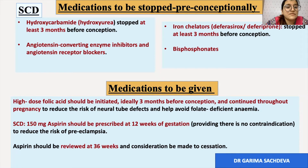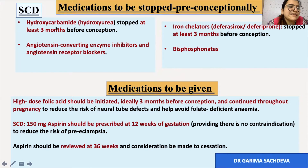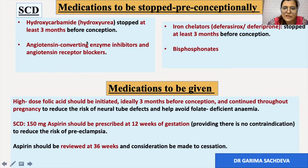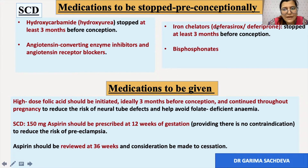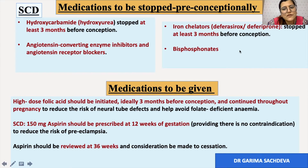Regarding medications to be stopped in the preconception period: for sickle cell disease, hydroxyurea should be stopped at least three months before conception, and ACE inhibitors and ARBs given for hypertension should be stopped preconceptionally. For beta thalassemia, iron chelators like deferasirox and deferiprone should be stopped at least three months prior to conception. The only iron chelator safe during pregnancy is desferrioxamine. Bisphosphonates should also be stopped.